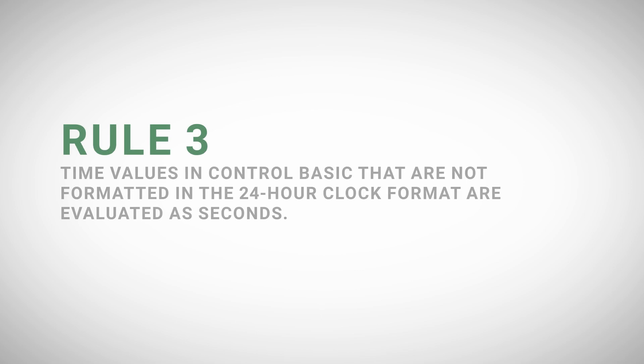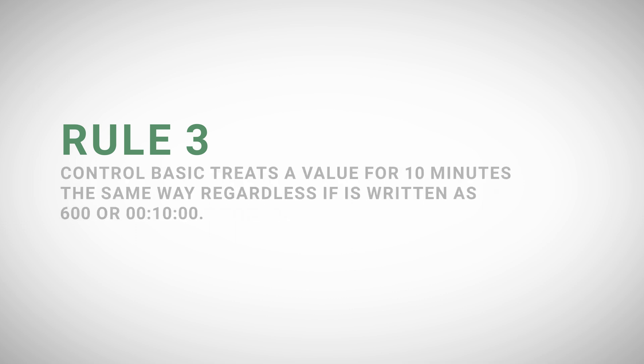Rule three: time values in Control Basic that are not formatted in the 24-hour clock format are evaluated in seconds. Control Basic treats a value for 10 minutes the same way regardless if it is written as 600 or 0 hours, 10 minutes, and 0 seconds.